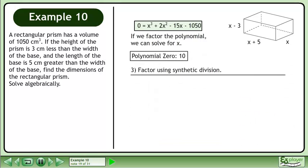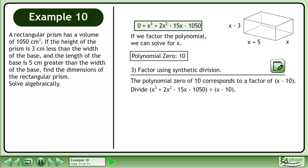Now factor the polynomial using synthetic division. The polynomial zero corresponds to a factor of x-10. Divide x³ plus 2x² minus 15x minus 1050 by x-10.